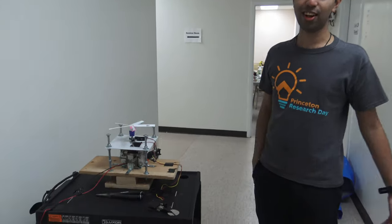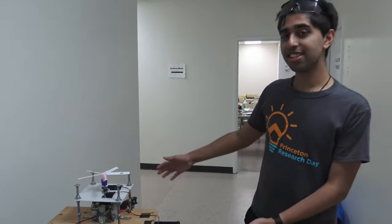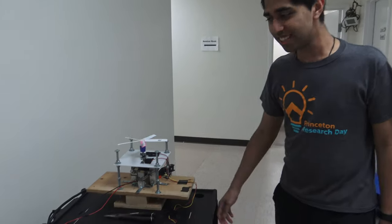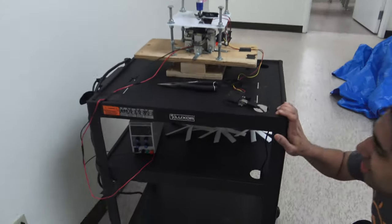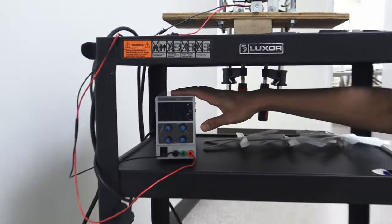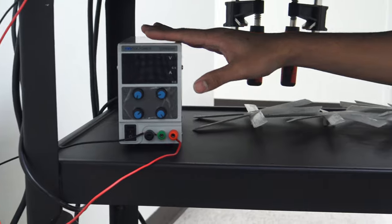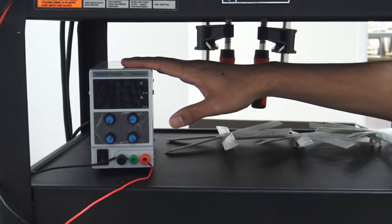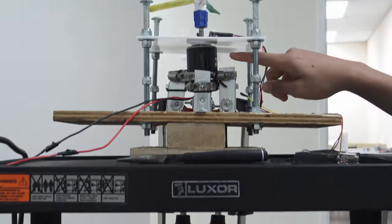Hi everyone, so this is our hand helicopter setup. And this is the setup that we're actually going to use to launch our blades. So I guess it all starts with the power supply down here which we use to control the voltage and the current which controls the angular velocity of the entire system.